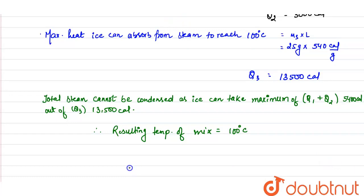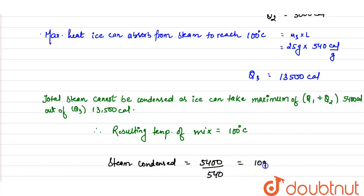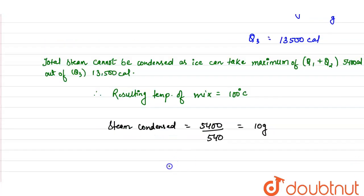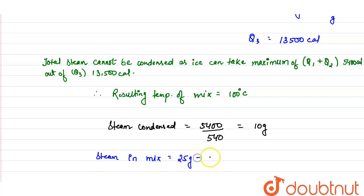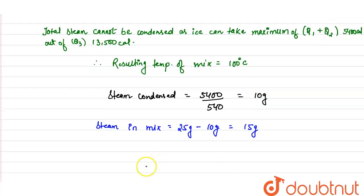Now calculate the amount of steam condensed. Steam condensed = heat absorbed by ice ÷ latent heat of steam = 5400 calories ÷ 540 cal/gram = 10 grams. So 10 grams of steam will be condensed. The steam remaining in the mixture = total steam − steam condensed = 25 grams − 10 grams = 15 grams.